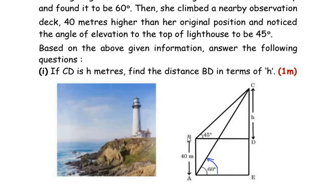Now she moves on top of an observatory deck. Let us say she is at point B and the height of the observatory deck is 40 meters with respect to the ground. When she stands at point B, she again looks at the top of the lighthouse, and her eyes make an angle of 45 degrees from the line of sight — so this becomes the angle of elevation at point B. It is given that if the height of CD is h meters, we have to find the distance BD. Let us consider triangle CDB, which is a right-angled triangle because the lighthouse makes a 90-degree angle with the ground. The entire line CDE is at 90 degrees with respect to ground AE.